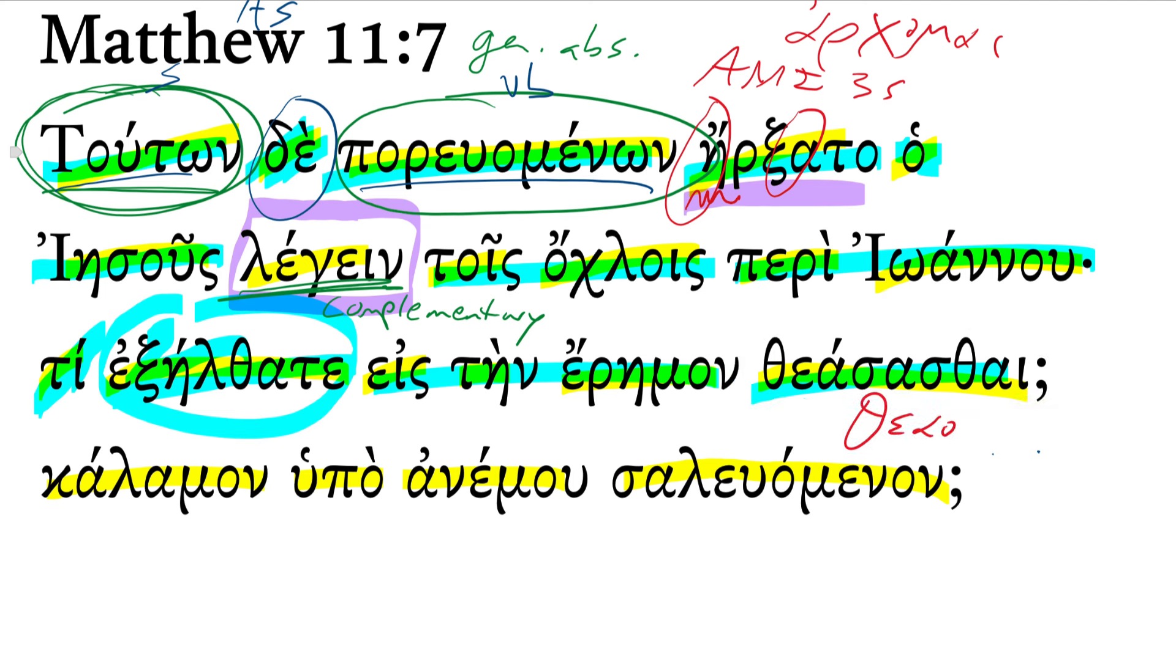To see, to behold, to look at - theaomai. What we have here is an aorist middle infinitive: What did you go out into the wilderness to see?